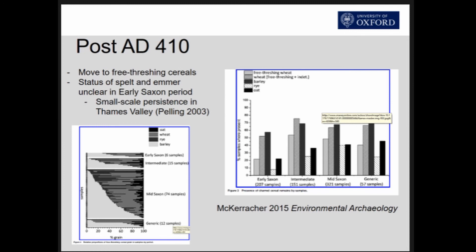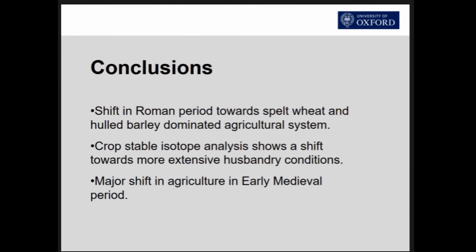The shift towards free-threshing cereals seen in many other parts of Europe is not taking place in Britain in the Iron Age or Roman period. Those changes don't really happen until the early medieval period, as recent work by Marijke Kooistra has shown. Spelt wheat, which is really dominant in the late Roman period, basically disappears by the sixth century, so something clearly very major is happening in that early medieval period.